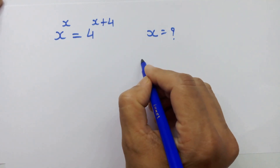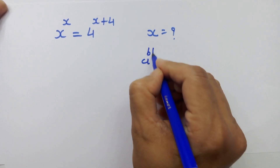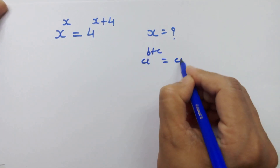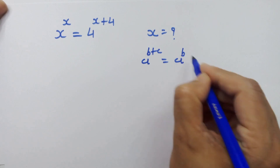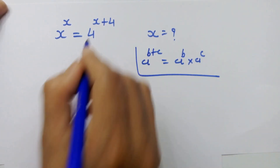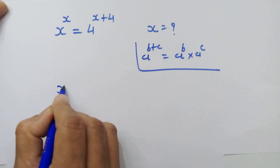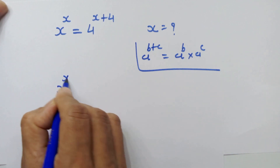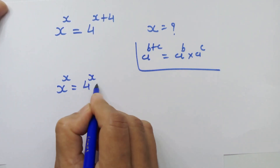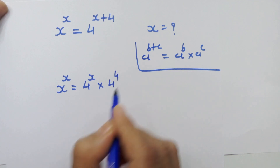If we have a raised to b plus c, then we can write it as a raised to b into a raised to c. By using this rule on the right side, we can write x raised to x is equal to 4 raised to x into 4 raised to 4.